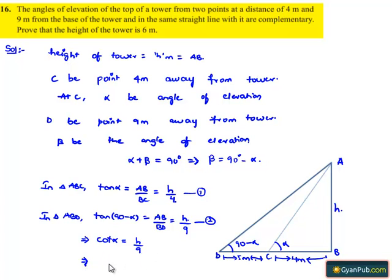By sending on to right hand side we get 9 is equal to h into tan alpha. But from equation 1 we have tan alpha is equal to h by 4, therefore we get 9 is equal to h into h by 4, which implies h square is equal to 9 into 4, that is 36.